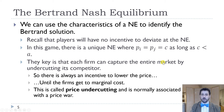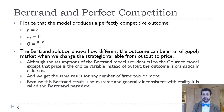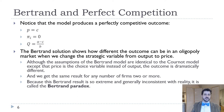That is exactly the perfectly competitive outcome — the same as our perfect competition model. Price equals marginal cost (P equals C), profit equals zero, and total quantity equals A minus C over B. Bertrand's insight is that we don't need many firms to get to perfect competition; we just need two firms competing on price. And it doesn't matter whether we have two, five, ten, or a hundred firms — we get the same result.